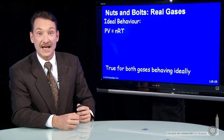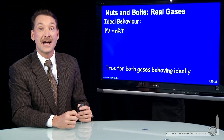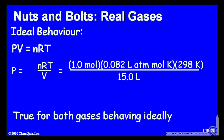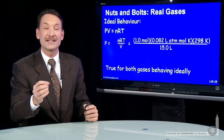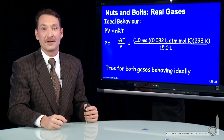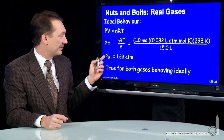First, we'll assume they behave like ideal gases and use the ideal gas expression: PV = nRT. Solving for pressure gives P = nRT / V. We plug in one mole of gas, 298 K, and 15 liters. For the ideal gas expression, it doesn't matter which gas — both gases are predicted to have the same pressure, because the ideal gas law doesn't include the nature of the particle.